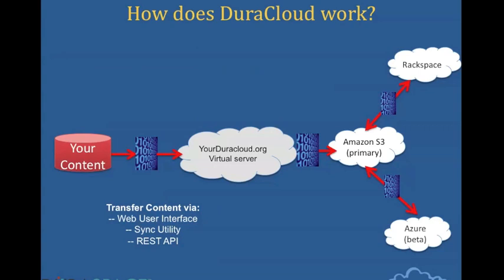At a very high level, how does DuraCloud work? Your organization's content is residing in your local store. You then transfer that content over an HTTPS connection, a secured internet connection, into your DuraCloud server, which is actually a virtual server unique to your organization. You transfer that content using a web-based user interface, a client-side tool, or you can even use programmatic interfaces to move your content over.